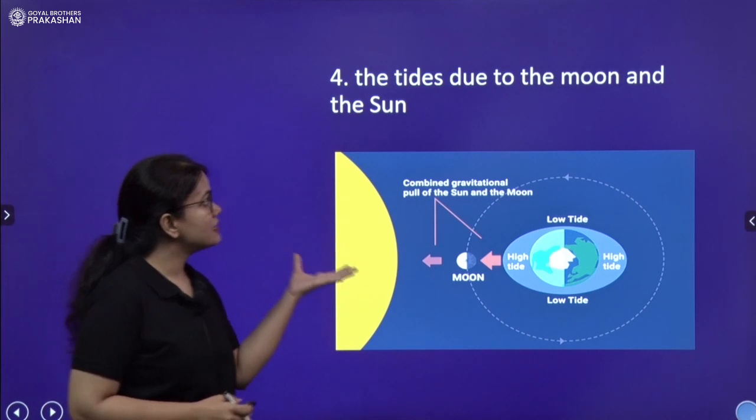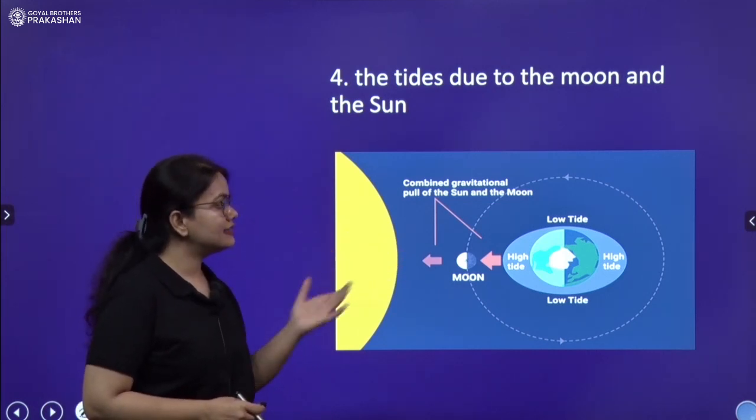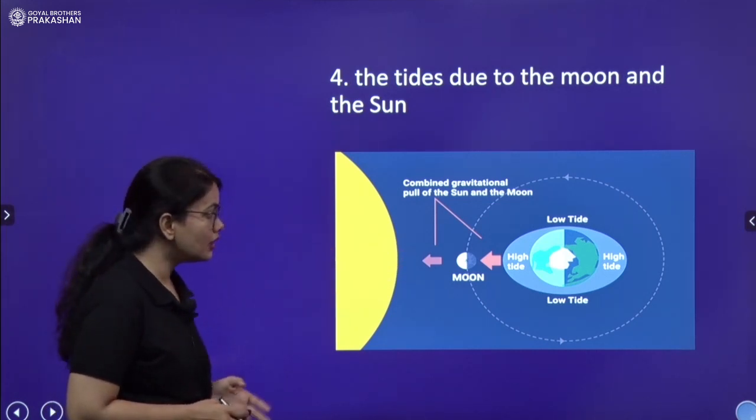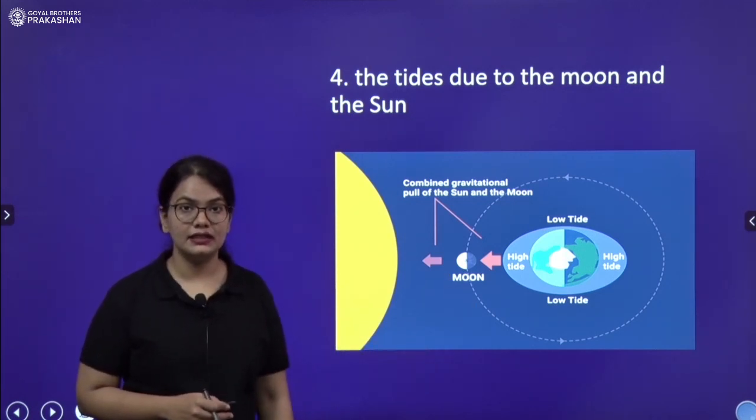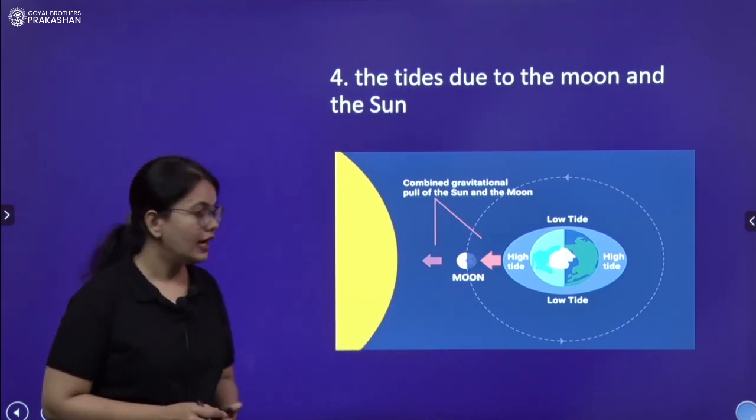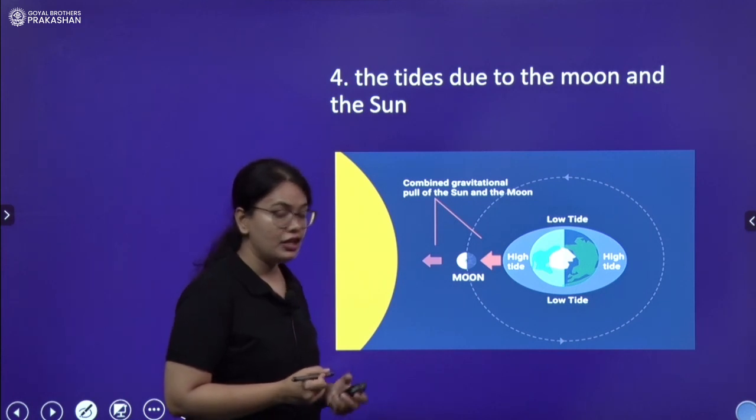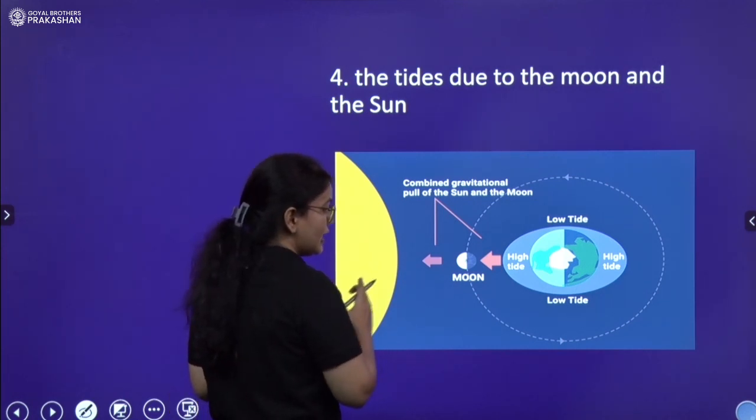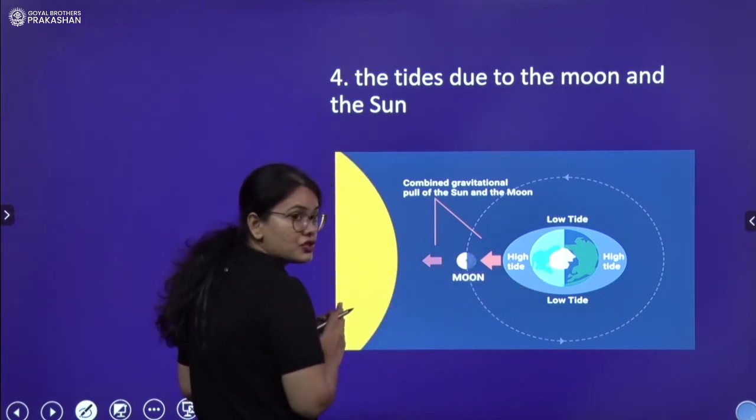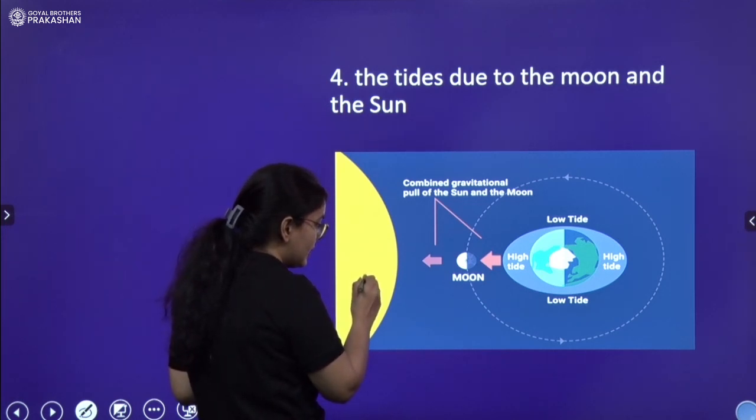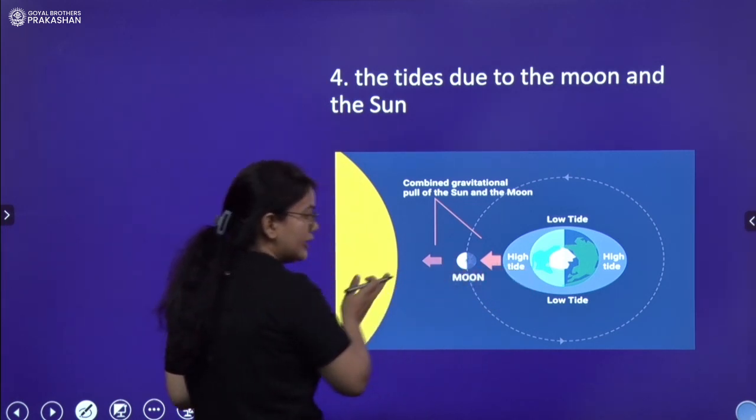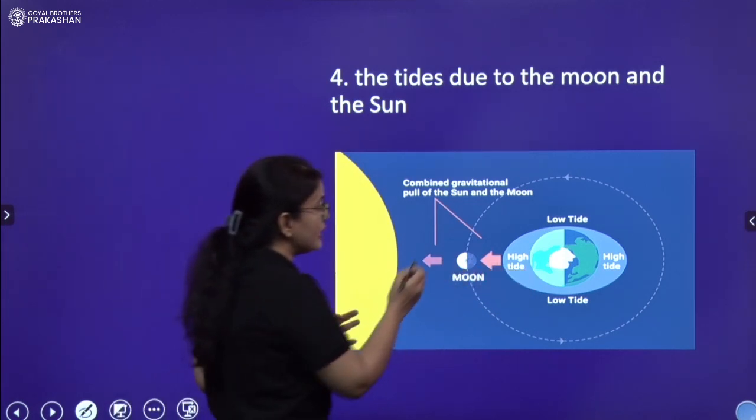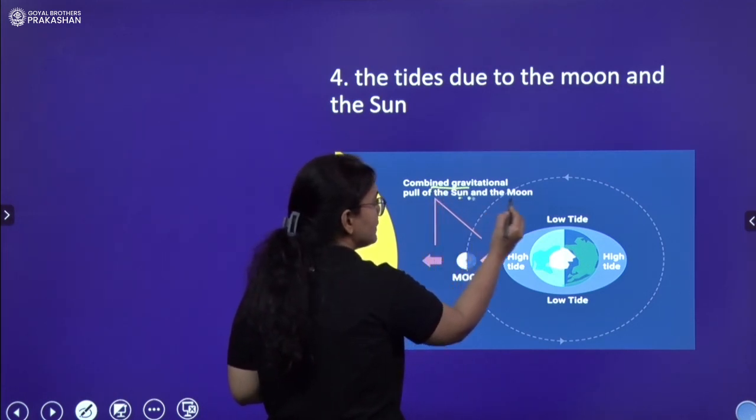Fourth, the tides due to moon and the sun. You must have seen tides in the ocean and in the sea. How do they generate? When earth, when sun, moon and earth they are in this position, this particular orientation that sun, moon and earth, they are adjacent then they combine gravitational pull of sun and moon. Sun is applying gravitational force towards itself, moon is also applying.